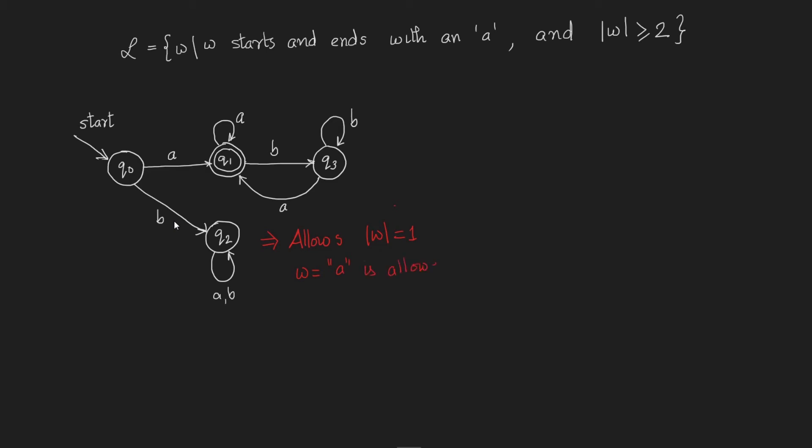We therefore need to change this deterministic automaton to reflect this new constraint. We start similarly by constructing the first start state q0. As earlier, on an A from q0 we move to q1, and on a B we move to a dead state. This represents the initial constraints that the word must start with an A.